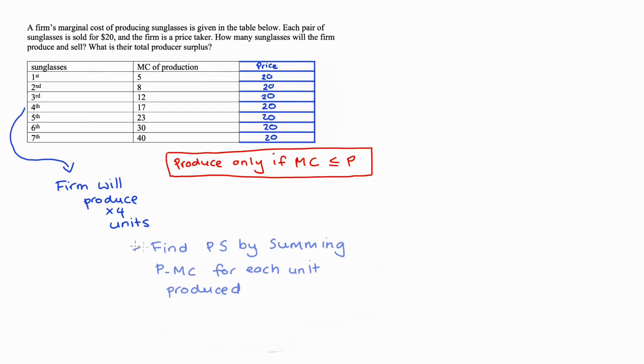Our producer surplus is found by taking the difference between the price and the marginal cost for each unit produced, and then we add those differences up. I can just make another column here where I find price minus marginal cost for each unit. For the first unit, we get the difference of 20 minus 5, that's 15.